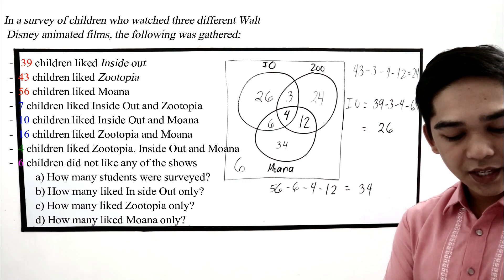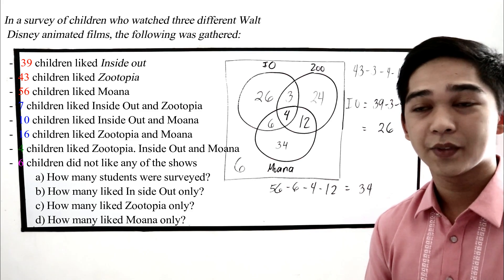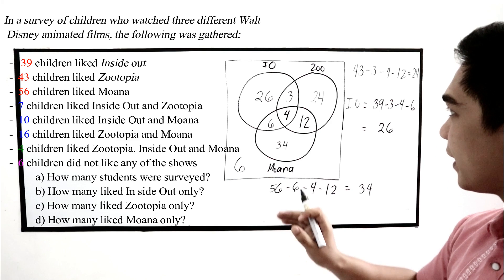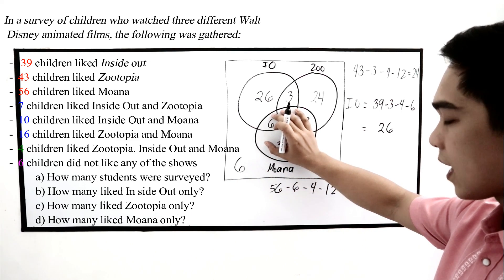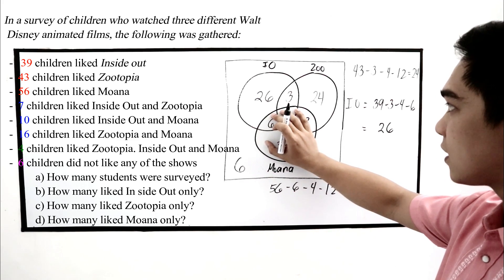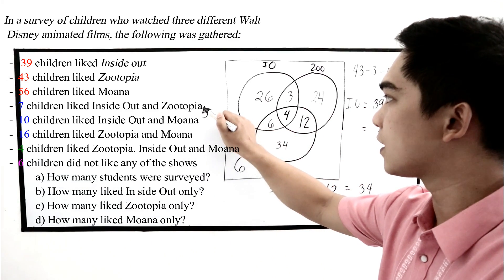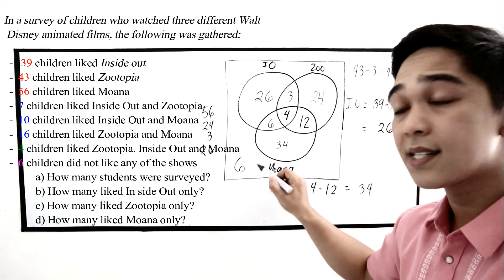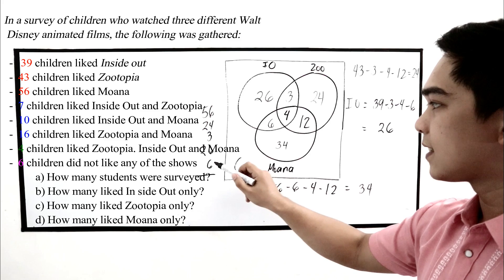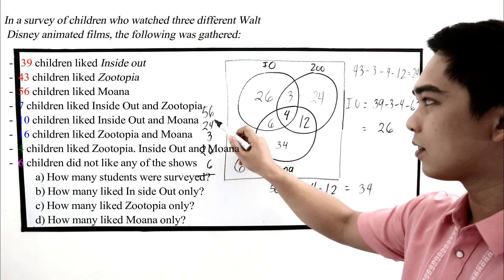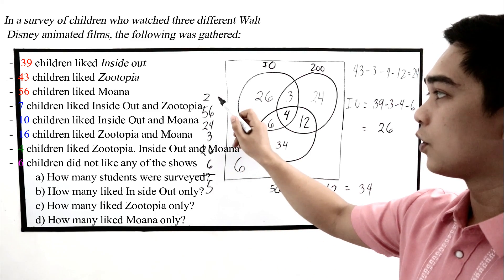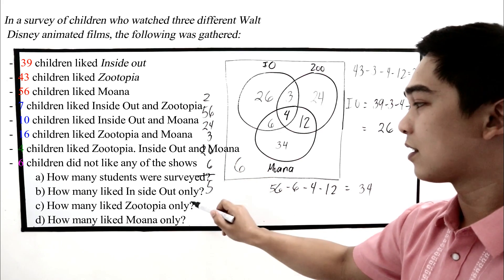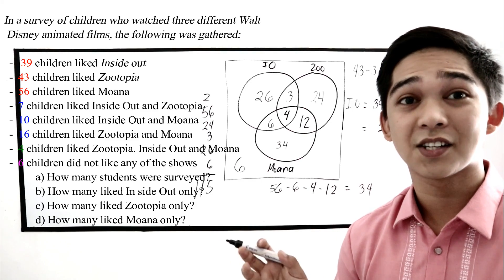First question: how many students were surveyed? We add all numbers in our Venn Diagram. We know Moana's total is 56, add 24 for Zootopia-only, add 3 for Inside Out and Zootopia, add 26 for Inside Out-only, and add 6 outside. Adding all values: 56 plus 24 plus 3 plus 26 plus 6 — plus the remaining intersections — equals 115. So 115 students were surveyed in total.